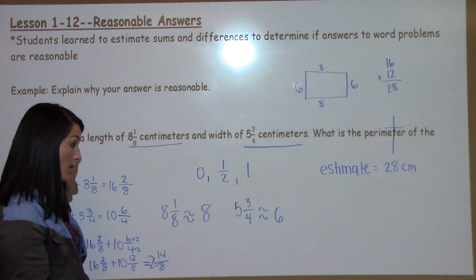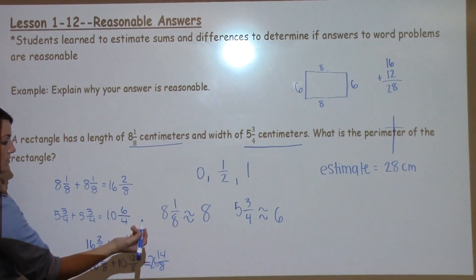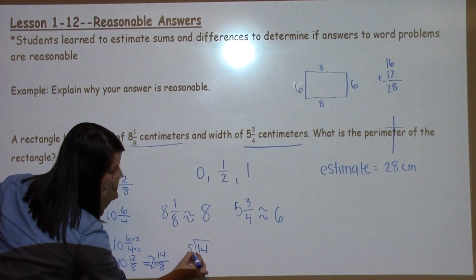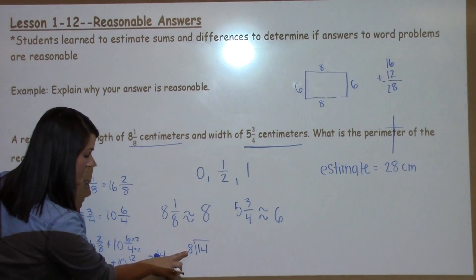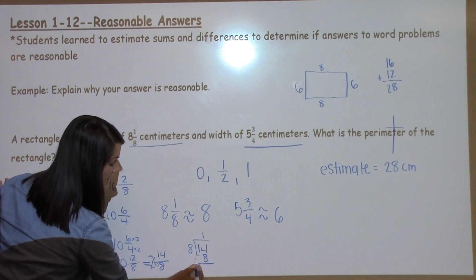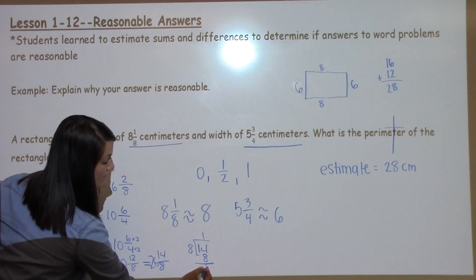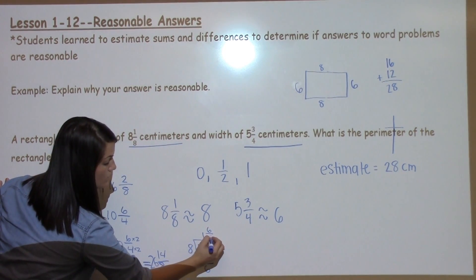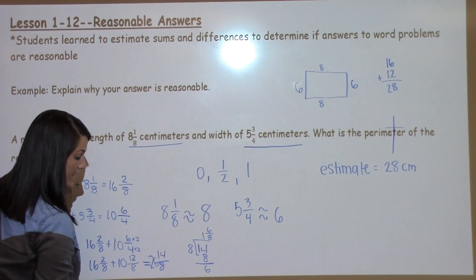Now 14/8 is still improper, so I have to divide 14 divided by 8 to make it a proper fraction. 8 can go into 14 one time, giving me 8. 14 minus 8 is 6, making my new numerator 6 and my denominator 8.